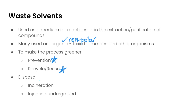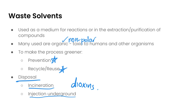Finally, we need to consider disposal and make sure that it is as safe as possible. Options like incineration can produce carbon dioxide, a greenhouse gas that contributes to climate change, and can also produce toxic substances like dioxins. Alternatively, underground injection is a strictly controlled process, but it can introduce potentially toxic chemicals into the environment, so it may not be the best disposal method. These are some key considerations for how we get rid of waste solvents.